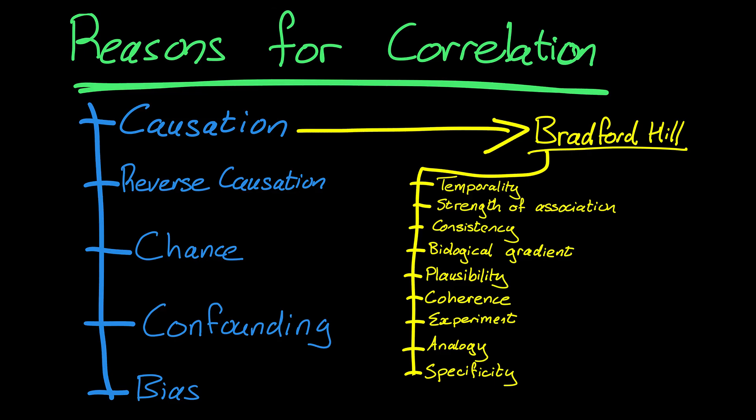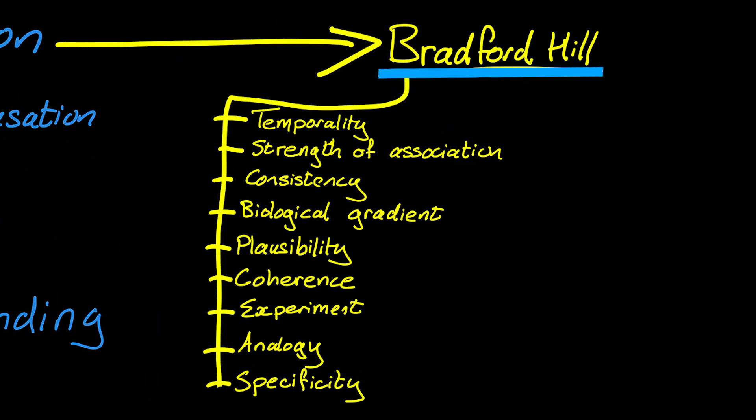So if we think we've got a relationship and we've considered reverse causality, chance, confounding, and bias — and you can add fraud and error to that list — how do we strengthen the argument that there actually is a causative relationship? The answer is the Bradford Hill criteria. No one of these is absolutely essential, meaning any one of them might be missing, and no one of them is absolutely conclusive on its own. But taken together, the more of these tick boxes you check, the more convinced we can be that there's a causative relationship.